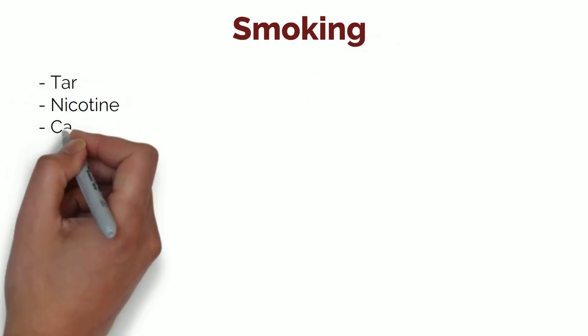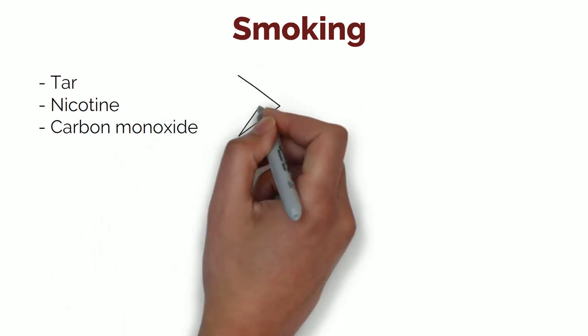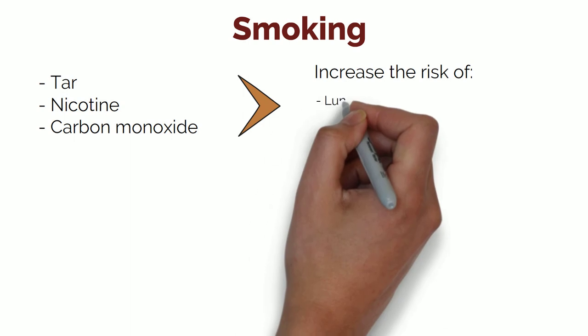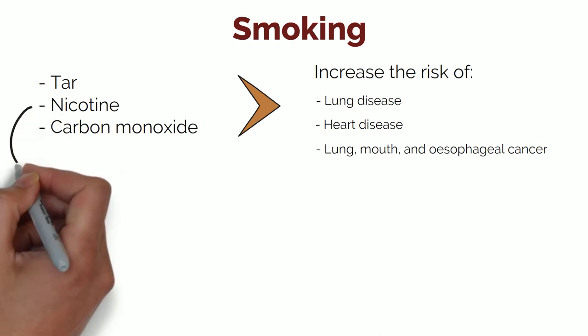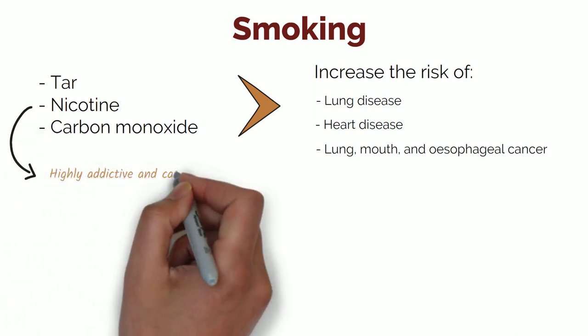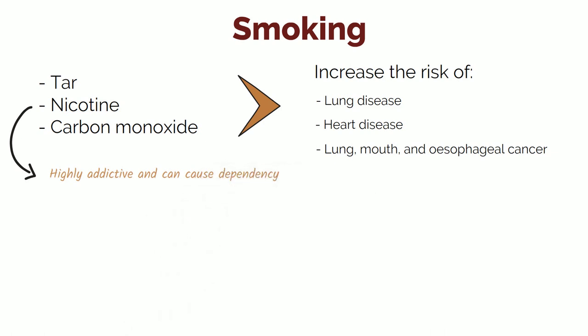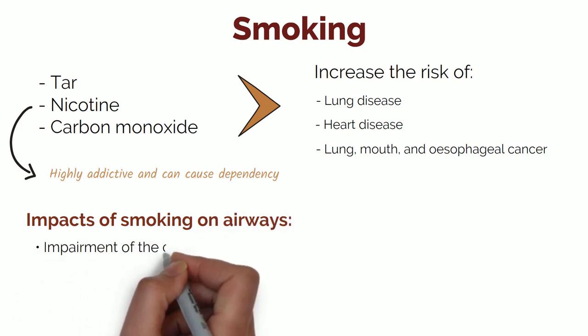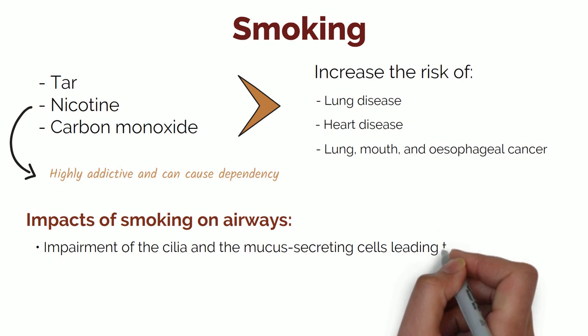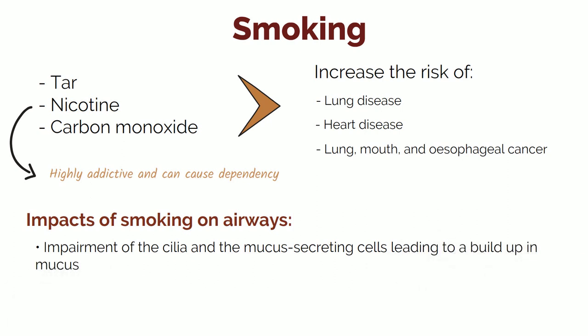Now for smoking and its effects. Cigarettes and tobacco contain harmful chemicals such as tar, nicotine and carbon monoxide. These chemicals increase the risk of developing lung disease, heart disease and cancers of the lungs, mouth and oesophagus, and have detrimental effects on the respiratory system. Nicotine is a highly addictive substance and can make users dependent on it, which is why smokers find it difficult to give up. Smoking can impair the function of cilia and the mucus-secreting cells, leading to a buildup of mucus which can irritate the lungs, causing a smoker's cough.